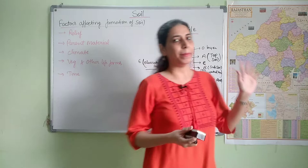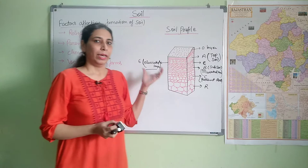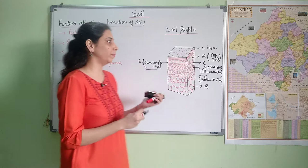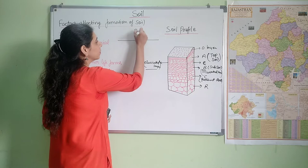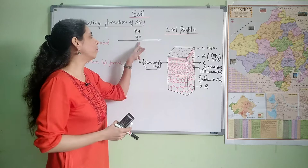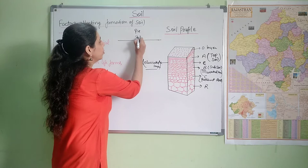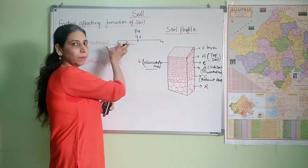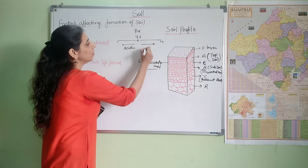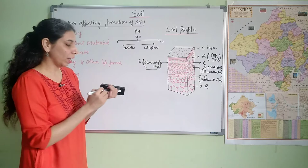Now one important thing to know about soil is acidity — the pH of soil. If we talk about neutral soil, the pH is 7.2. If the pH is below 7.2, the soil will be called acidic soil. If it is above 7.2, it will be called alkaline soil. So acidic soil and alkaline soil — these are the two categories.